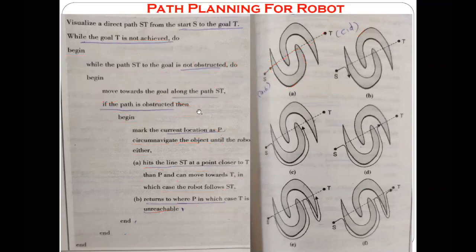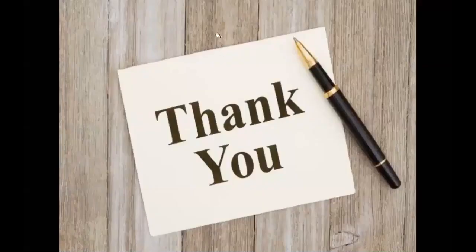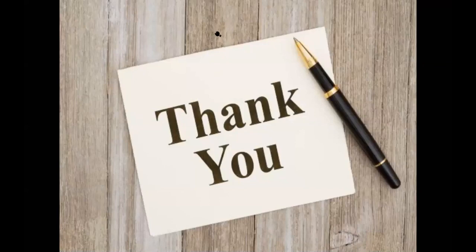Yes, so this is the Bug-2 algorithm for path planning for the robot. There are also other algorithms, but it is sufficient for our study to have just one algorithm regarding path planning for the robot. In this way the robot does path planning and can reach the target or goal position. That is it from today's session; we will continue the next part in the next lecture. Also, a notice: three students — Mangre, Rohini More, and Naikode — urgently need to send their passport size photo to Pando sir.